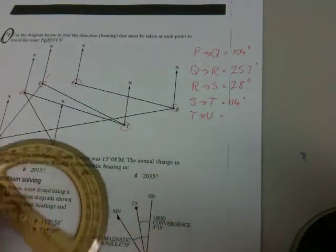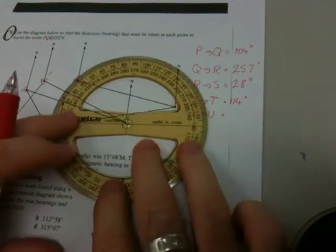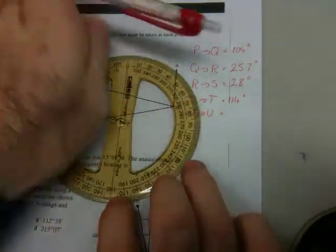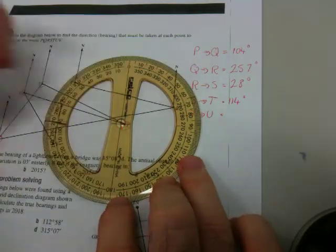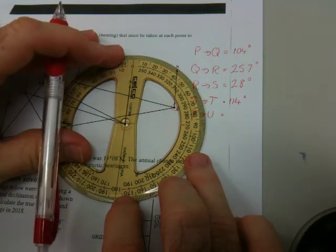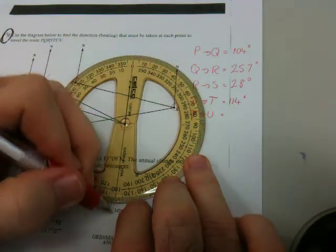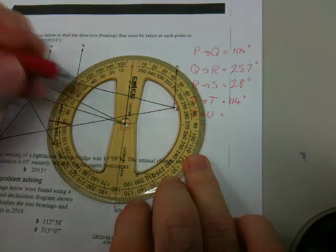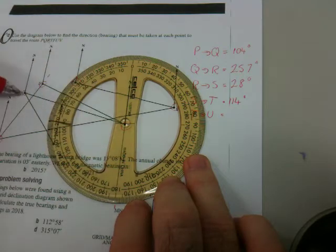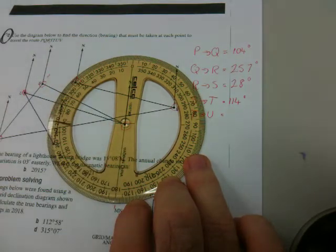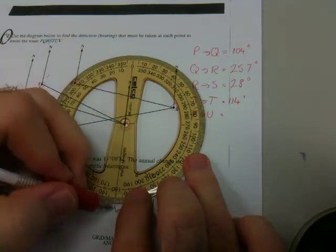Imagine if I only had a 180 degree protractor. So what I would do first is line up 0 degrees with north. So imagine if I only have that much of a protractor. So it's still lined up with north. And I would be able to say, right, that's definitely 180 degrees. And we're going further because we're going from T through to U over here. So it's definitely more than 180 degrees. Now I could mark a line here, like that.